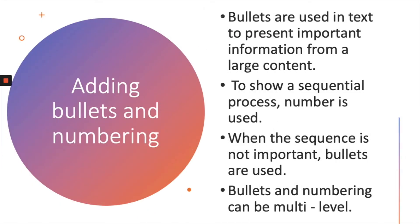Bullets are used in text to present important information from a large content. To show a sequential process, numbers are used. Bullets and numbers are used for two different purposes. If you want information presented one after another as important highlighted points, then you need to use bullets.